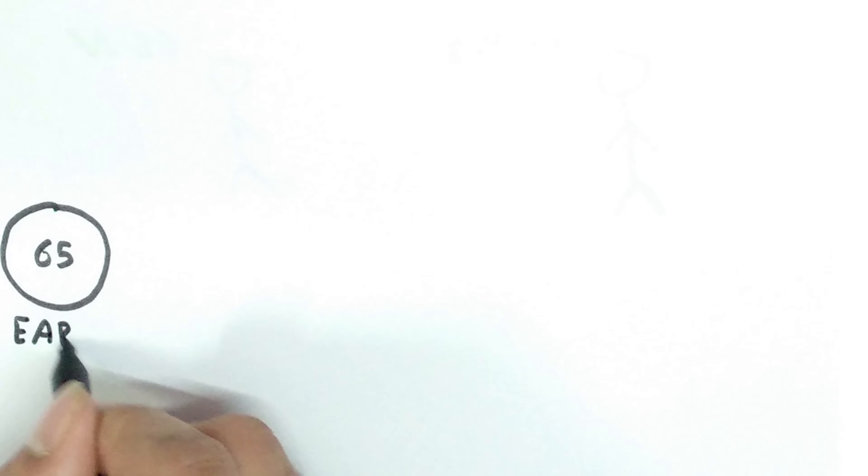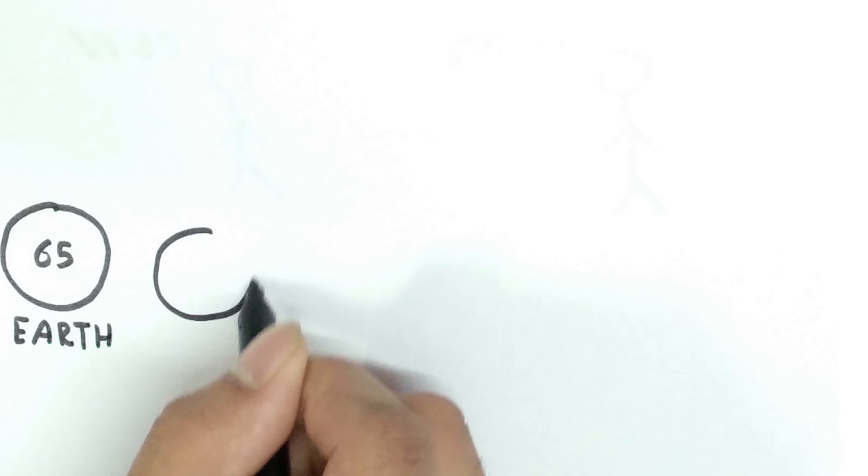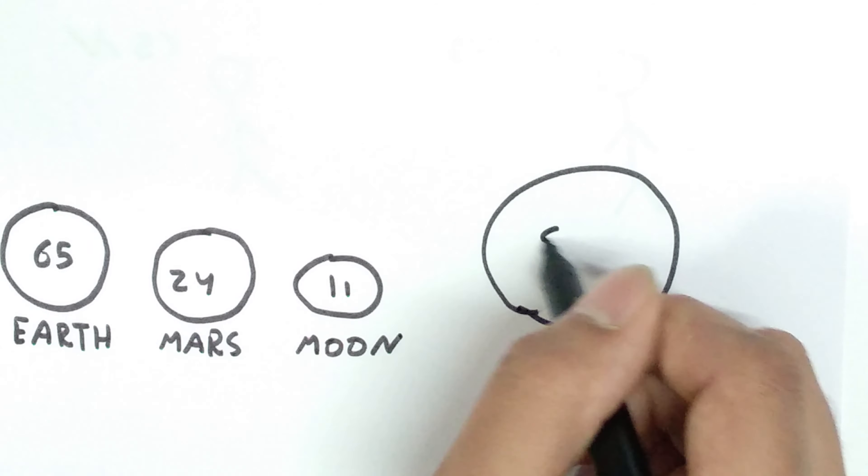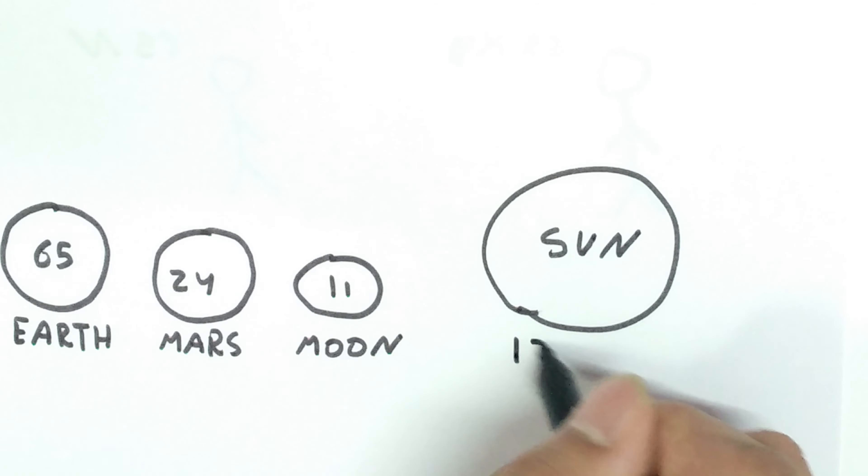Your weight will be different on different locations in the universe as the value of G is different. It will be 11 newton on the moon and 24 newton on Mars and will be 1370 newtons on the sun.